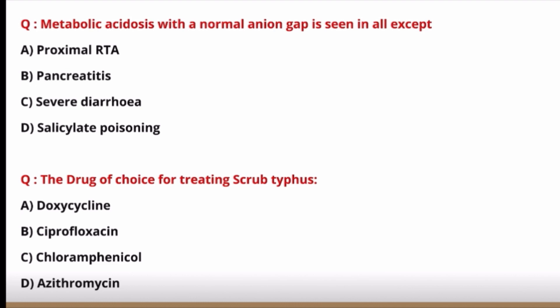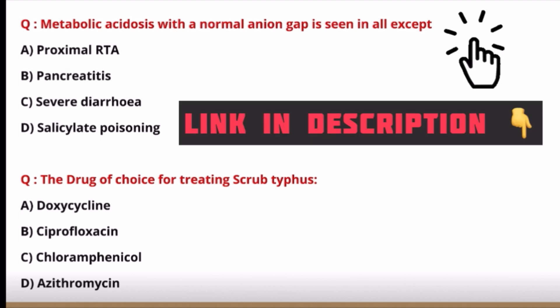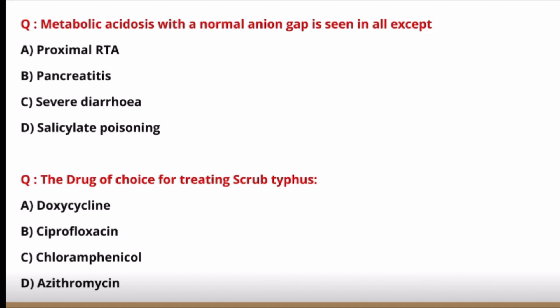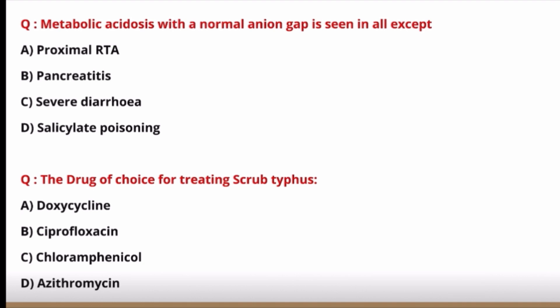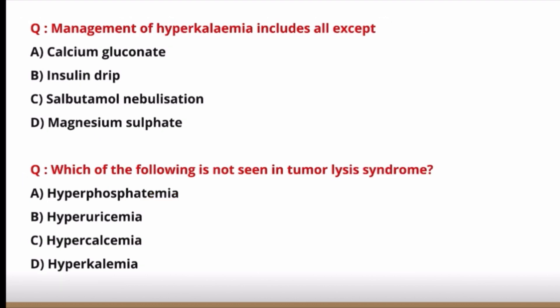A complete video on acid-base disorders is available in the description or i-button. Next question: drug of choice for treating scrub typhus — doxycycline, ciprofloxacin, chloramphenicol, or azithromycin. The answer is doxycycline. Azithromycin can be used as an alternative and is generally used in pregnant women, since doxycycline is contraindicated in pregnancy. Otherwise, doxycycline is the drug of choice.